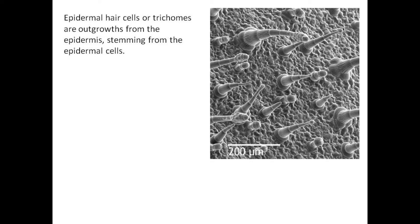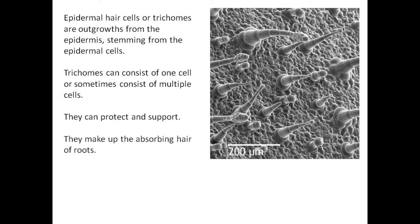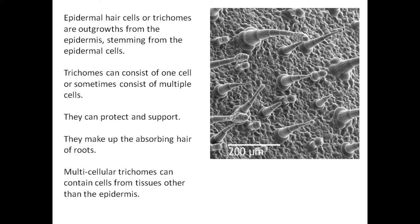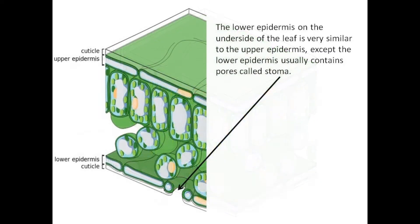Epidermal hair cells, or trichomes, are outgrowths from the epidermis stemming from the epidermal cells. Trichomes can consist of one cell or sometimes consist of multiple cells. They can protect and support, and they make up the absorbing hair of roots. Multicellular trichomes can contain cells from tissues other than the epidermis. The lower epidermis on the underside of the leaf is very similar to the upper epidermis, except the lower epidermis usually contains pores called stomata.